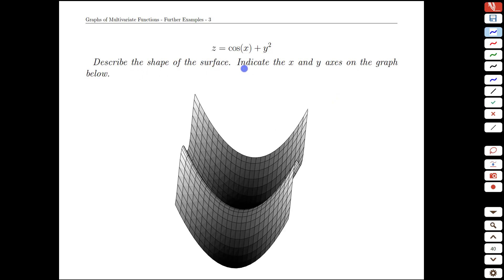Describing the shape of the surface, what we would see is a parabola say at height 1 here that then gets moved down as we move in the x direction, so this direction here would be the x direction.